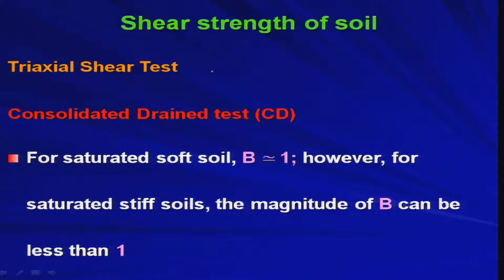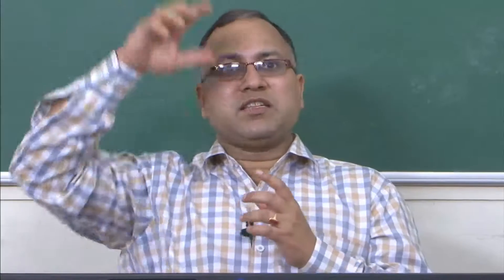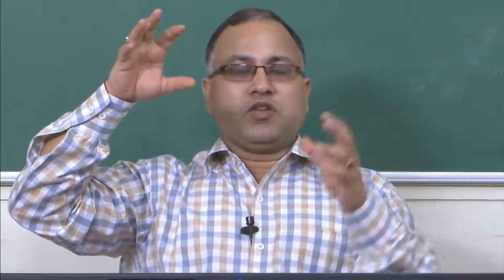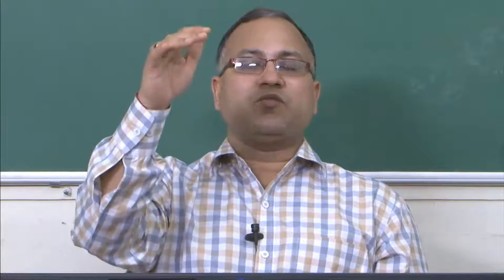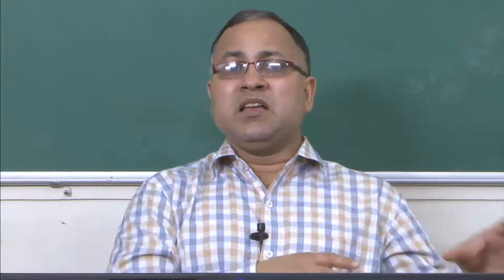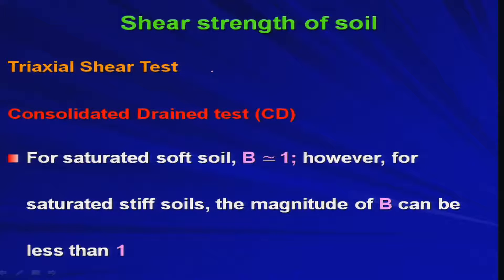For saturated soft soil, B is approximately equal to 1, because you are stopping the drainage. If you recall the spring-loading analogy: if you apply pressure on the soil specimen, water will try to drain out, but because the valve is closed, whatever extra pressure comes on the soil specimen will be taken care of by the pore fluid — water. Therefore for saturated soil, B ≈ 1, meaning u_c equals sigma_3 and there is no enhancement in effective stress.